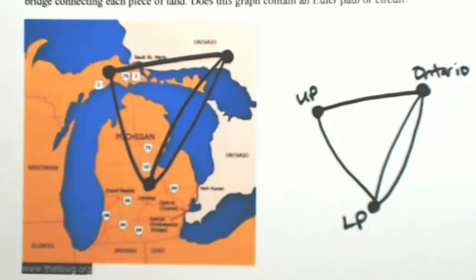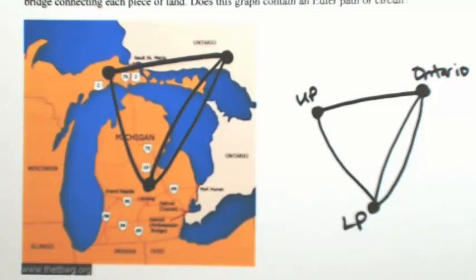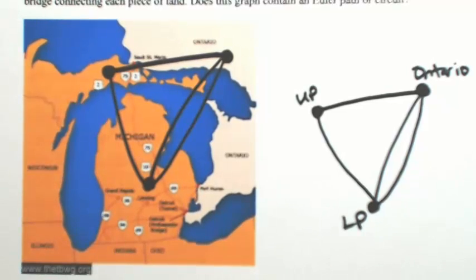So now the goal is to figure out, will this have an Euler path or an Euler circuit? The way we figure that out is by looking at the degree of each vertex. We're going to take a look at how many edges are going into each vertex.